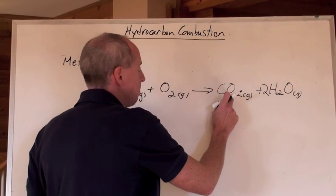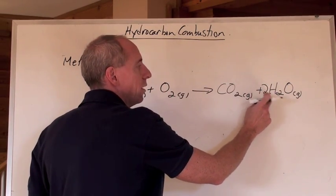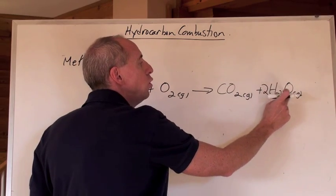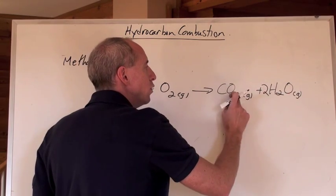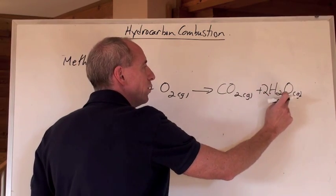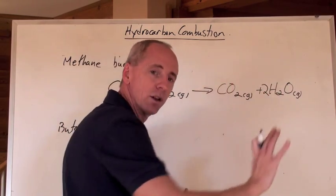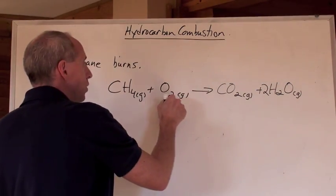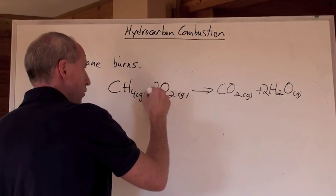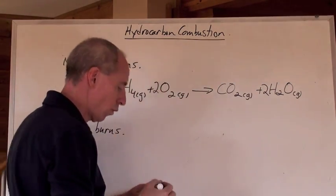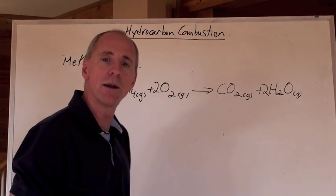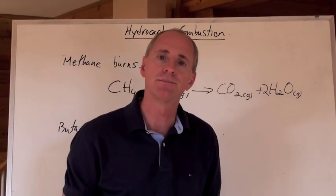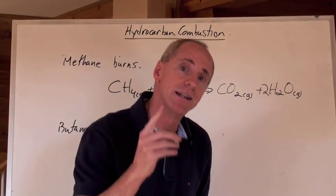2 oxygens in CO₂. Be very careful — plus 2 oxygens from the 2 H₂O, that's a total of 4 oxygens on the product side. So put a 2 in front of O₂: 2 times 2 is 4. And now we've got a balanced hydrocarbon combustion reaction.